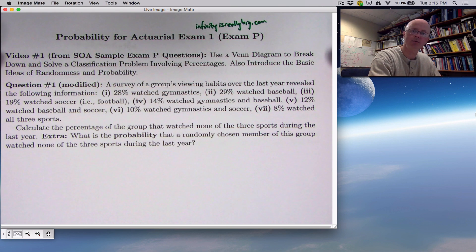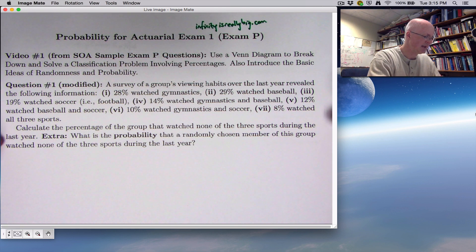The problem description is what's stated first here, and it looks kind of complicated. The problem itself is not quite as complicated as it seems. It says, use a Venn diagram to break down and solve a classification problem involving percentages. The problem itself ends right here. However, I modify the problem. I'm adding an extra question, because the problem statement itself doesn't involve probability, but I want this video series to be about probability.